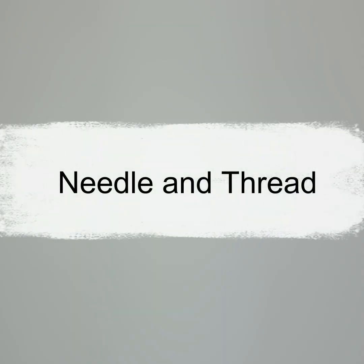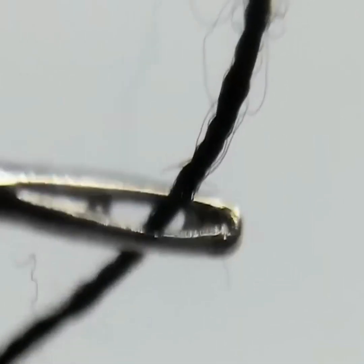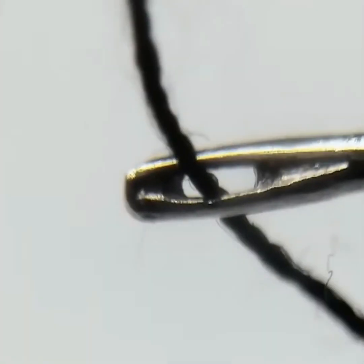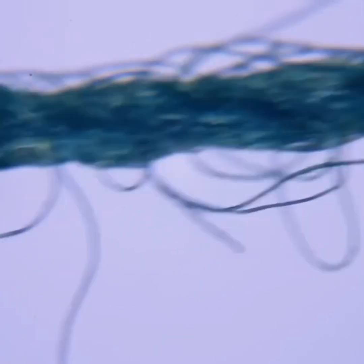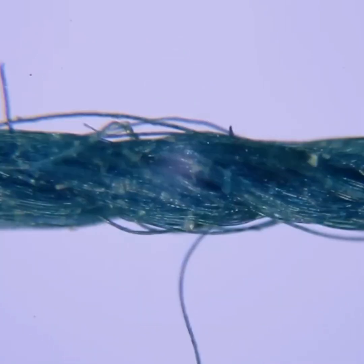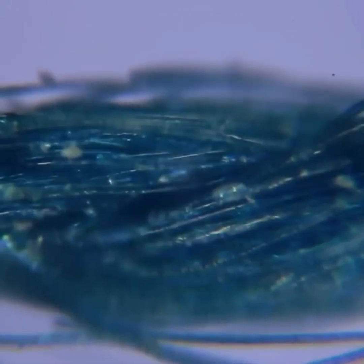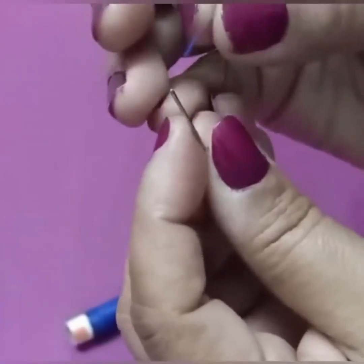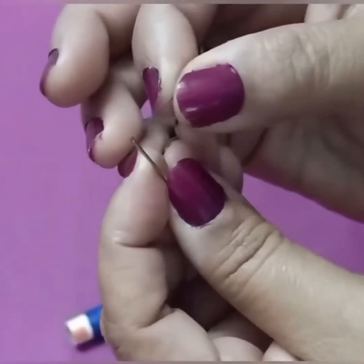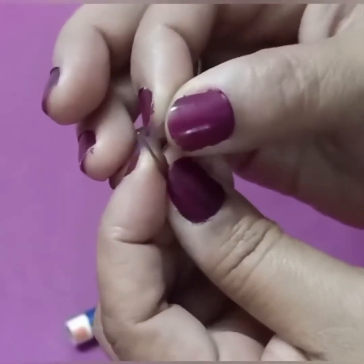Needle and thread. Look at the needle and thread under the microscope. The many threads you see are actually one thread, made up of many raw threads. But we see only one with our normal eyes, so the journey between the thread and the needle is quite involved.